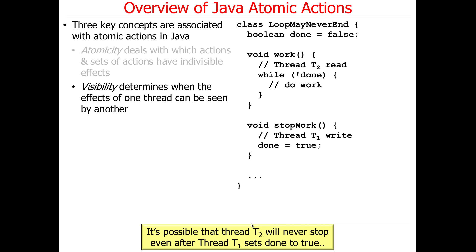The next topic — visibility — is related but different. Visibility determines when the effects of one thread can be seen by another thread. Here we have a class called LoopMayNeverEnd. We have a variable called done set to false, and thread T1 will call work and sit in a loop while the variable is not done.